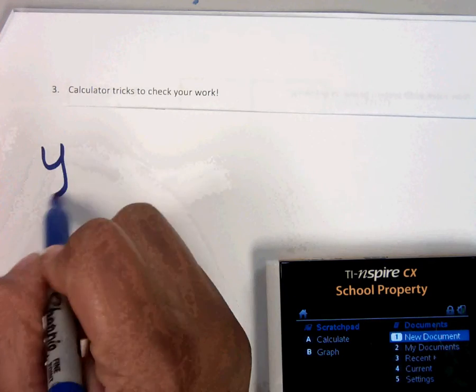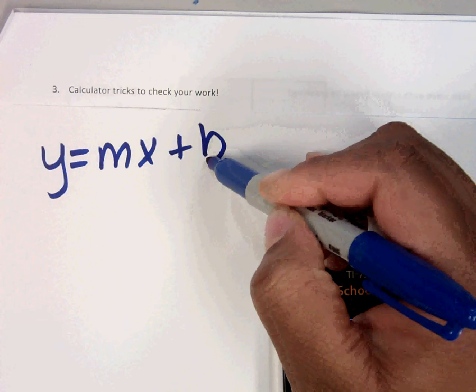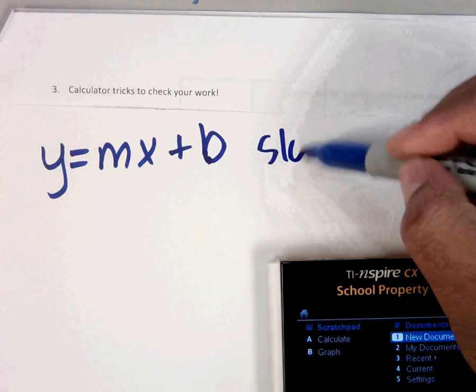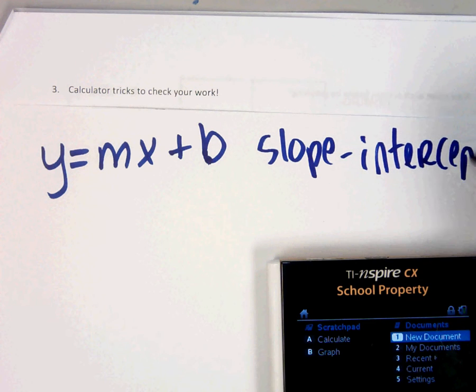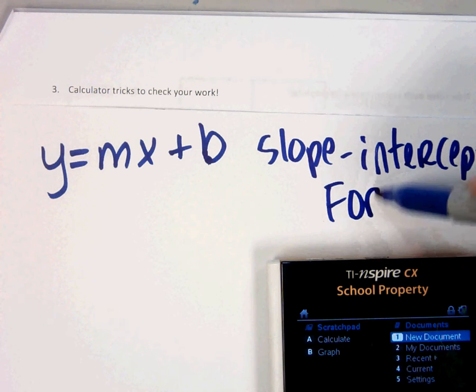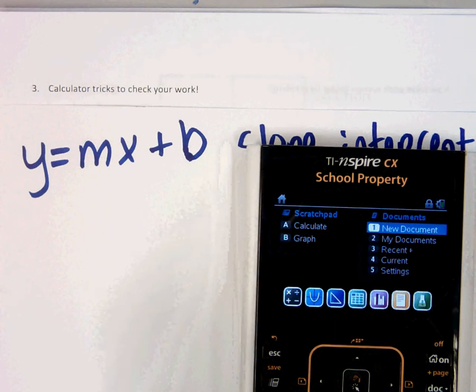So if your equation is solved for y equals mx plus b form, meaning slope intercept form, what we will do is, let me show you here.